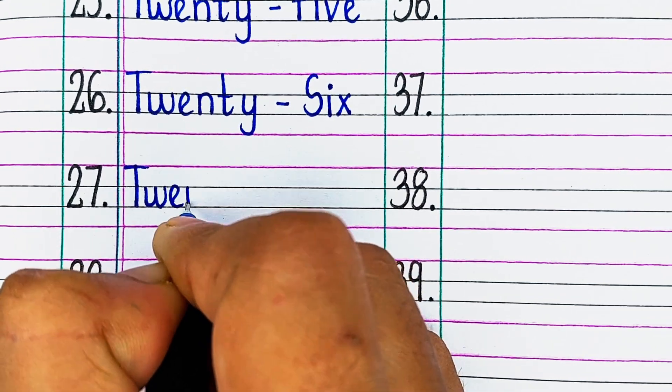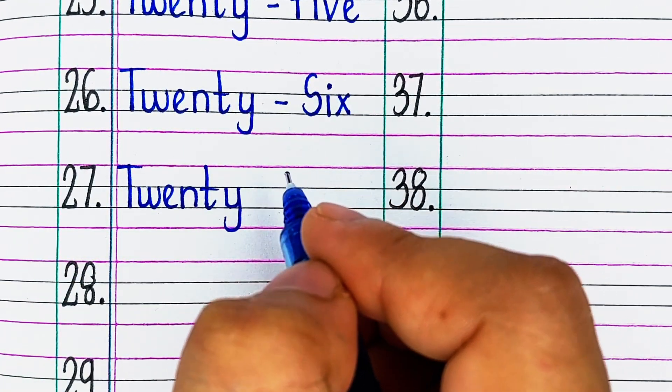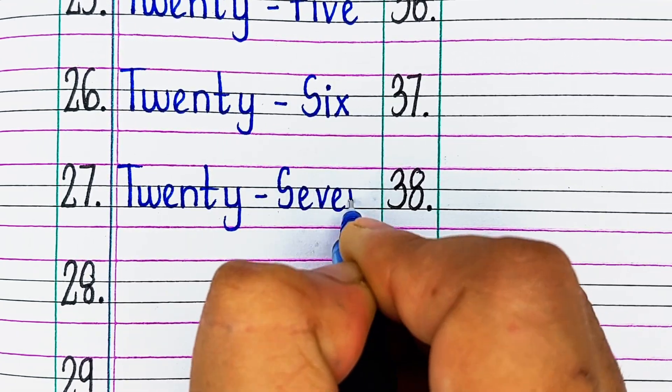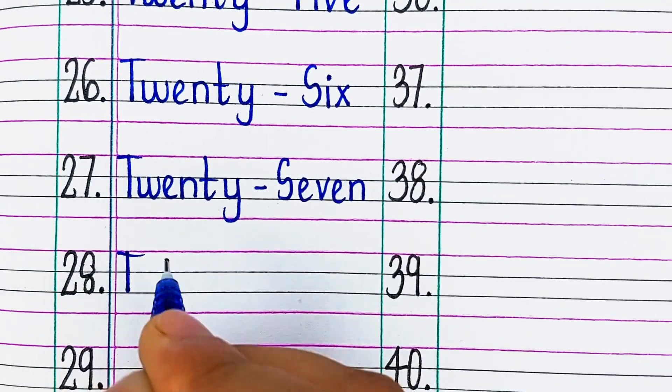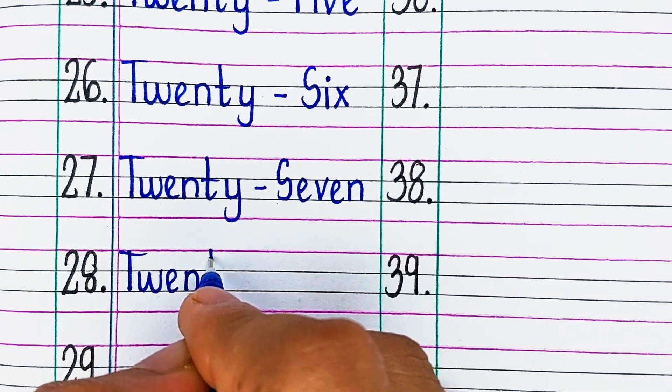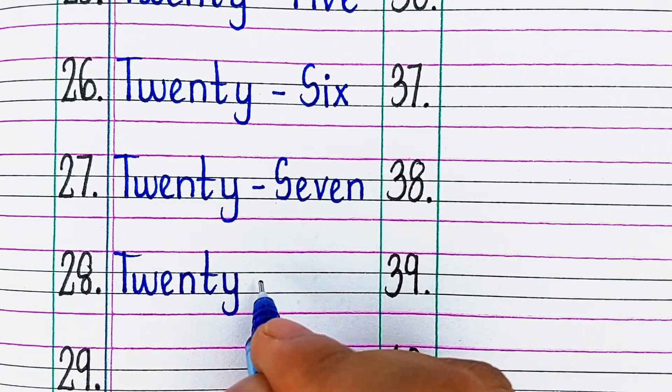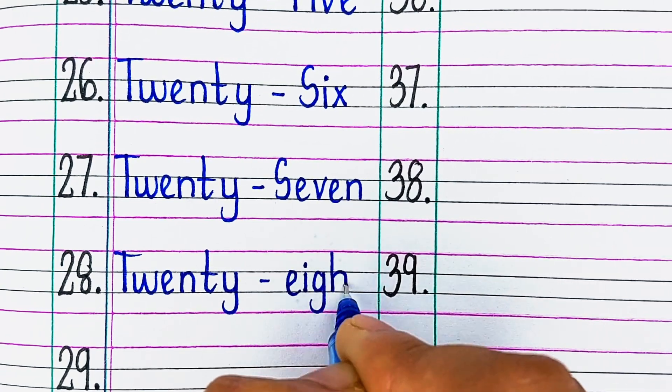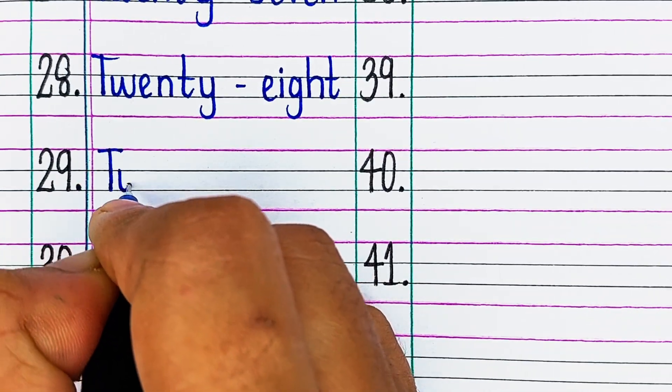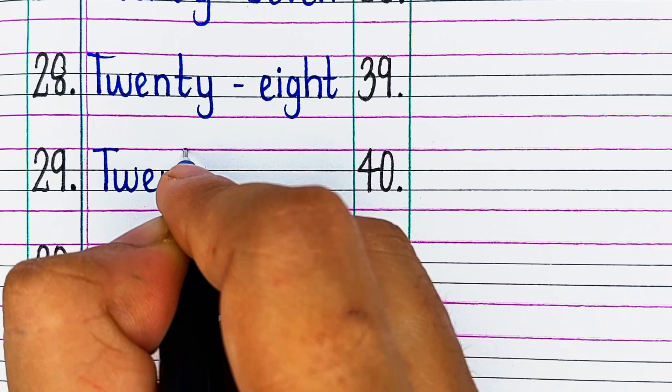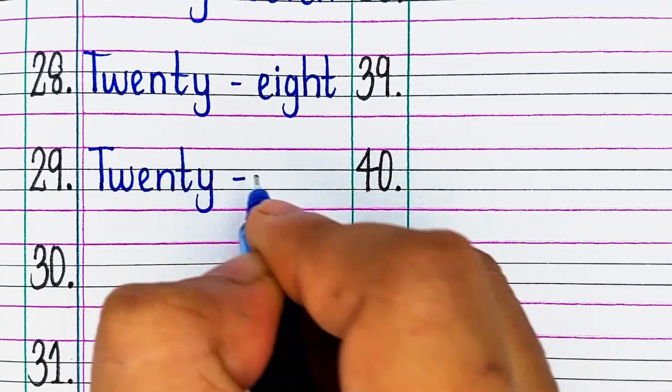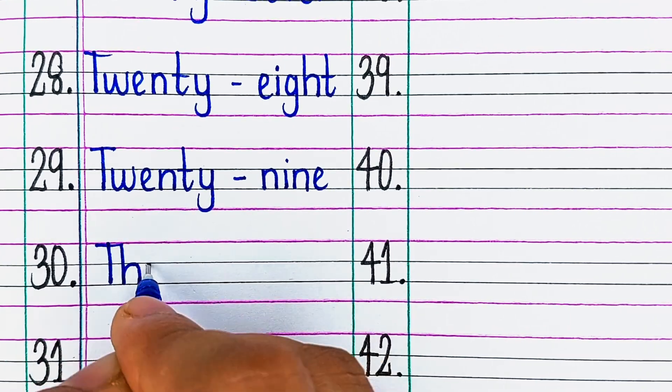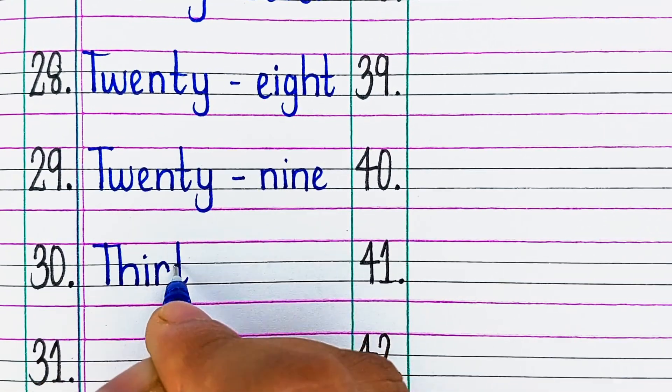Next, T-W-E-N-T-Y-S-E-V-E-N, 27. Next, T-W-E-N-T-Y-E-I-G-H-T, 28. Next, T-W-E-N-T-Y-N-I-N-E, 29. Next, T-H-I-R-T-Y, 30.